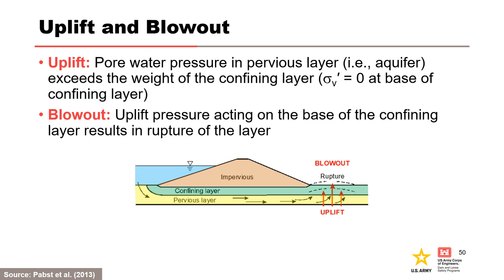If uplift pressure exceeds the weight of the confining layer, uplift can initiate and result in significant changes in the seepage regime, forming a new seepage exit beneath the confining layer where hidden deterioration can occur from concentrated seepage if horizontal gradients are high enough. Blowout ruptures the confining layer, providing an unfiltered exit to the ground surface; the rupture location may result from a defect and/or maximum uplift pressure. When assessing, consider assumptions for seepage conditions, tailwater conditions, degree of saturation, and density of the confining layer. Uplift can also initiate in partially saturated confining layers, especially for peat, soils with high organic content, or cohesive soils in drought conditions.